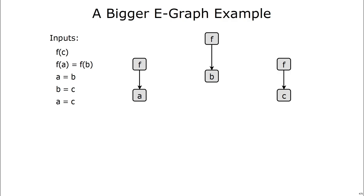Let's do a slightly bigger e-graph example now. This time, I'll have three terms in the e-graph, f of a, f of b, and f of c. First, we'll add an equality f of a equals f of b. Now we'll do a equals b, and b equals c. At this point, the e-graph needs to maintain that congruence invariant, just like before, so it discovers that f of b is equal to f of c.